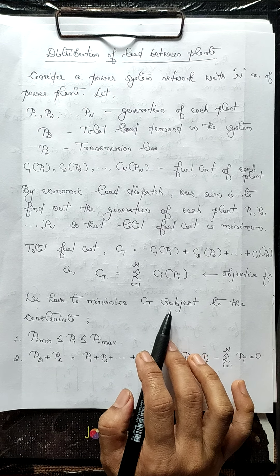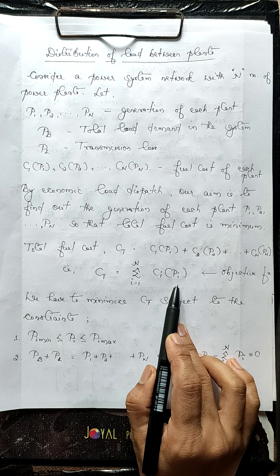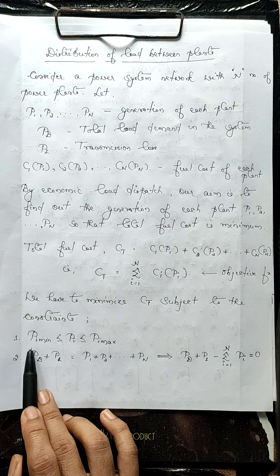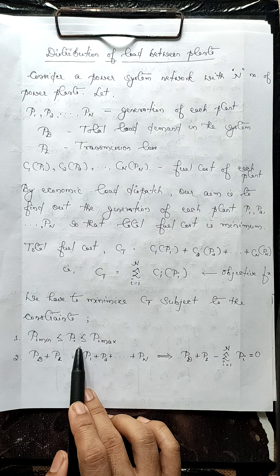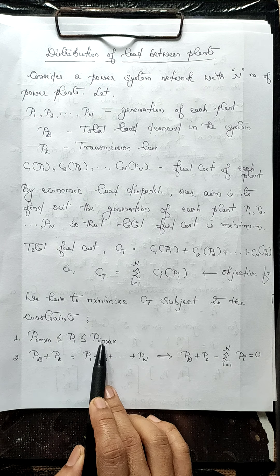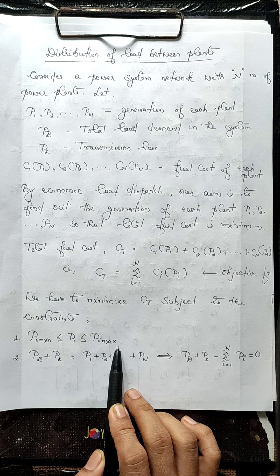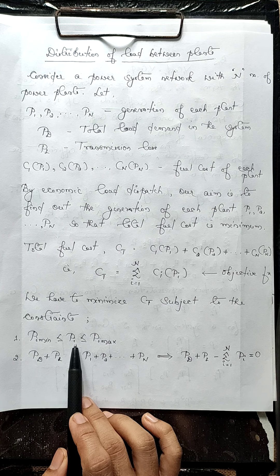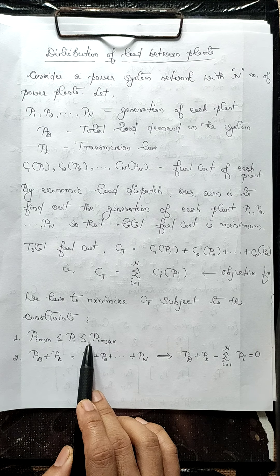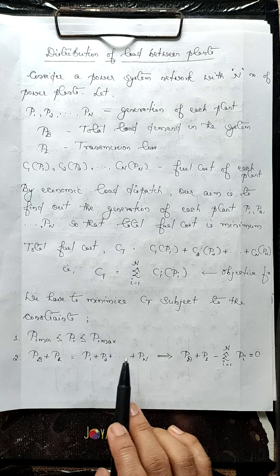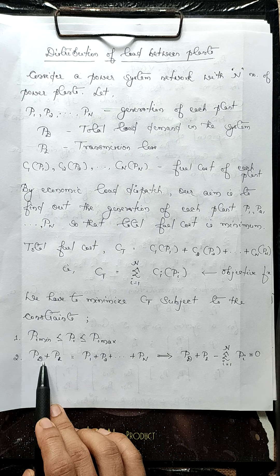Constraints simply means limitations. The first constraint is: Pi_min ≤ Pi ≤ Pi_max. This means the power generation of the i-th plant should be within a minimum and maximum limit. For each power plant there is a minimum and maximum limit for power generation, and the calculated value of Pi should lie within that range. This constraint is known as the inequality constraint, as it is represented with inequality symbols.